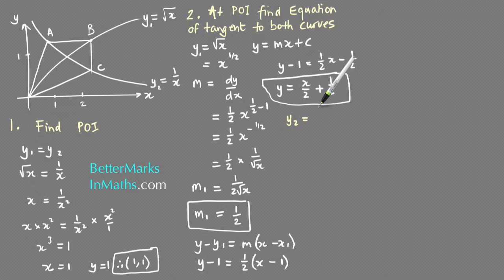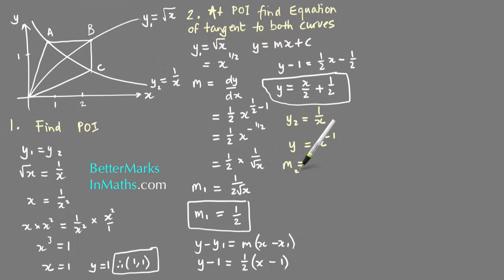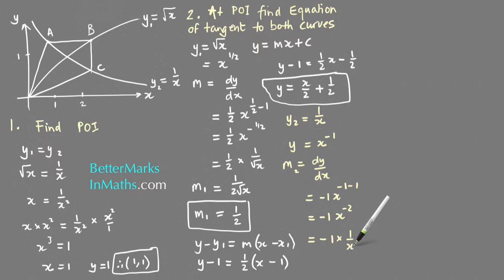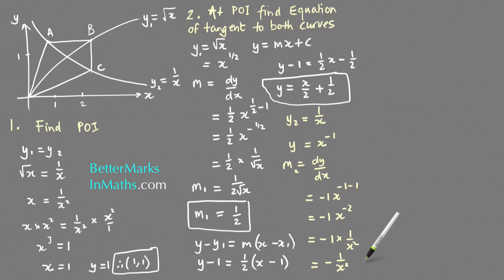For the second curve, y2 equals 1 on x, written as x to the minus 1. Finding m2: dy/dx gives minus 1 times x to the minus 2, which is minus 1 on x squared. This has a negative gradient. At x equals 1, substituting gives minus 1 on 1 squared, so m2 equals minus 1.